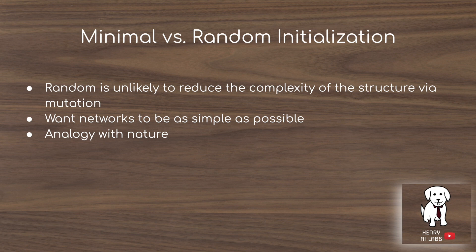Another key innovation in the NEAT paper is minimal initialization. In some evolutionary algorithms, networks are randomly initialized and could initially have massive complexity. Since we want networks to be as simple as possible — analogous to nature — NEAT starts from the bare minimum network structure and builds up from there.